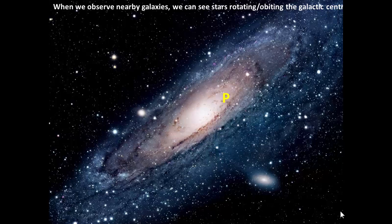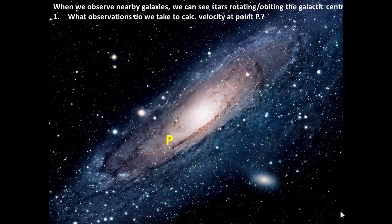There it is moving around the galactic center. So the question is what observations do we need to make to calculate the velocity at that point P? Well since it's moving away from us and we know the plane of the galaxy there will be some redshift, so you'll see a Doppler redshift effect as it moves away from us.